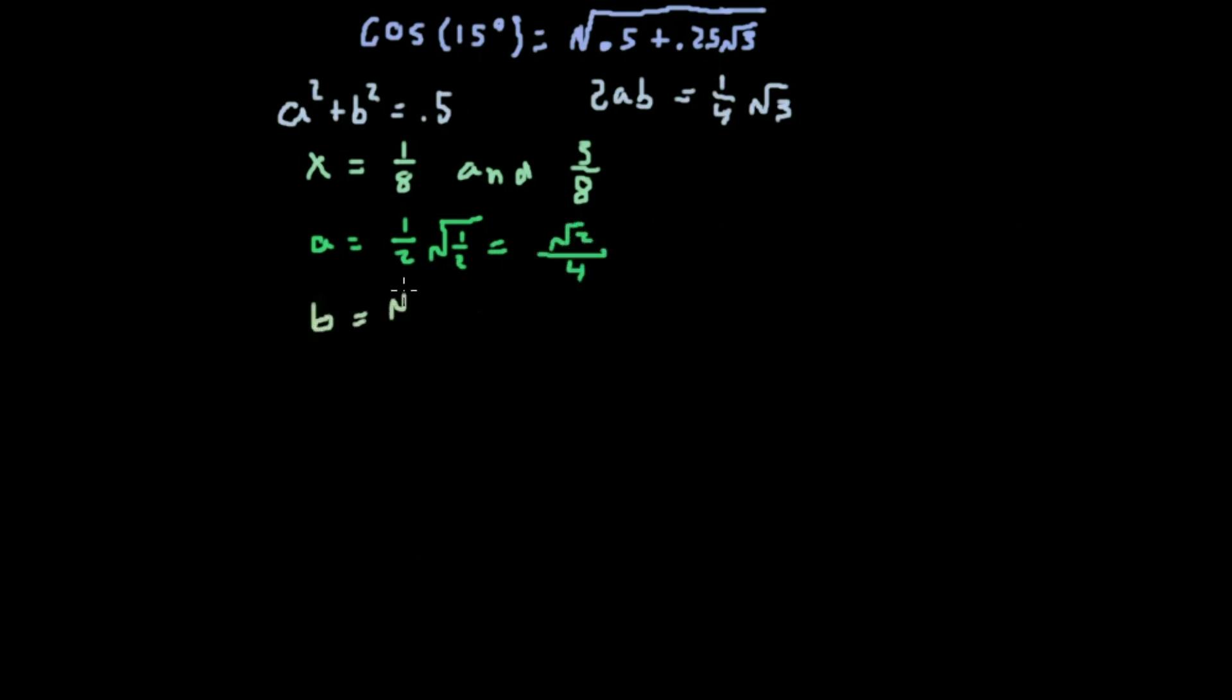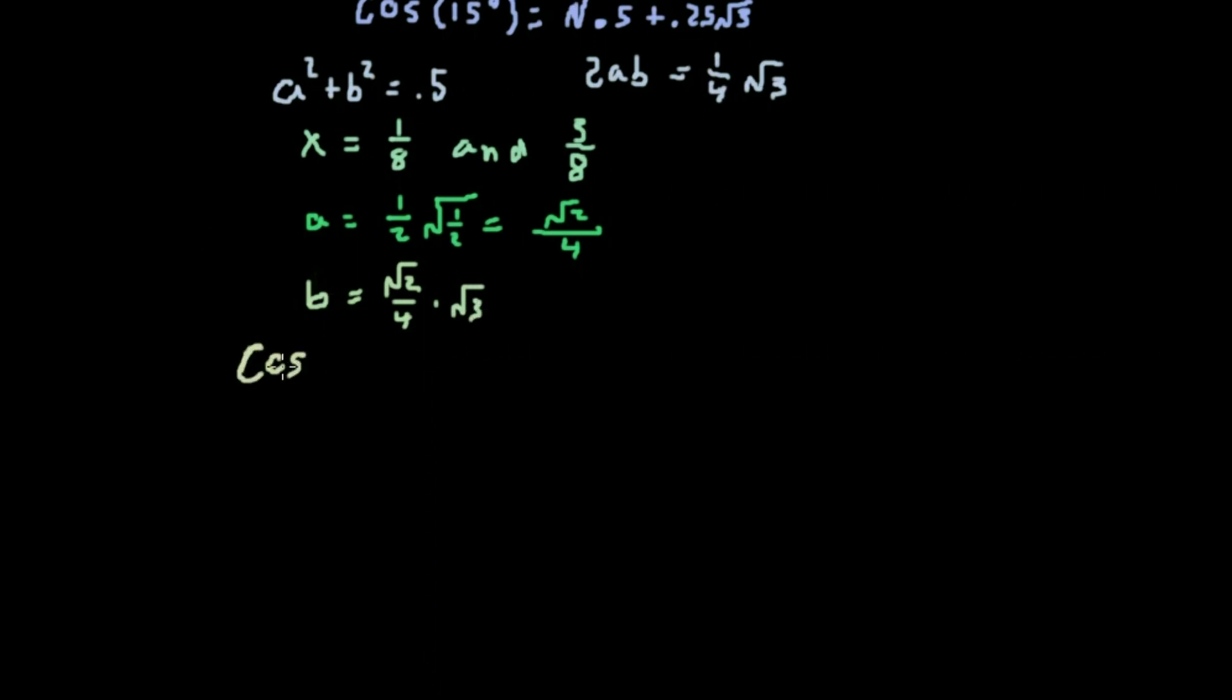So then by default, b is going to be the square root of 3/8, which is the same thing as root 2 over 4 times the square root of 3.